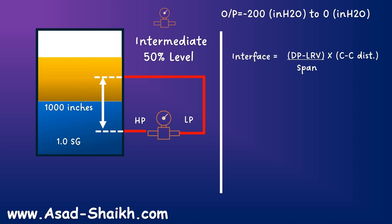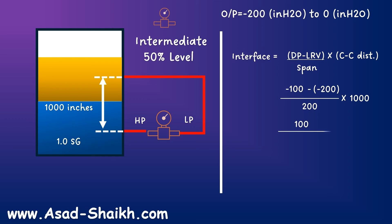The interface level formula is: Interface Level = (DP − LRV) ÷ Span × C-to-C distance. For the 50% case, the DP is minus 100 inches of water column. Subtracting the LRV of minus 200 gives 100, divided by the span of 200 inches of water column, multiplied by the C-to-C distance of 1000 inches. That gives 100 ÷ 200 × 1000 = 500 inches, which is absolutely correct for 50% of interface level.